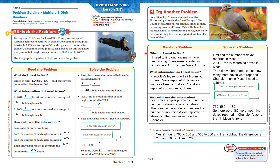Let's read the problem. What do I need to find? I need to find how many more morning doves were reported in Chandler, Arizona than in Mesa, Arizona. What information do I need? Prescott Valley reported 29 morning doves. Mesa reported 20 times as many as Prescott Valley, and Chandler reported 760 morning doves. How will I use the information? I can solve simpler problems: find the number of doves reported in Mesa, then draw a bar model to compare the number of morning doves reported in Mesa to those reported in Chandler.